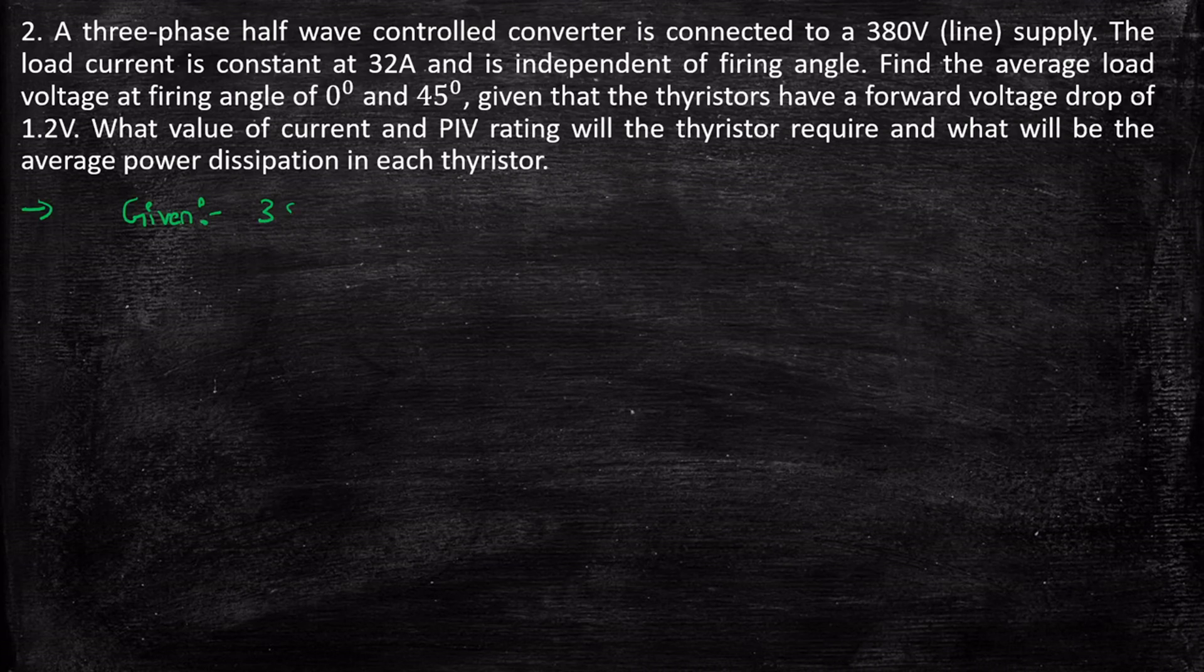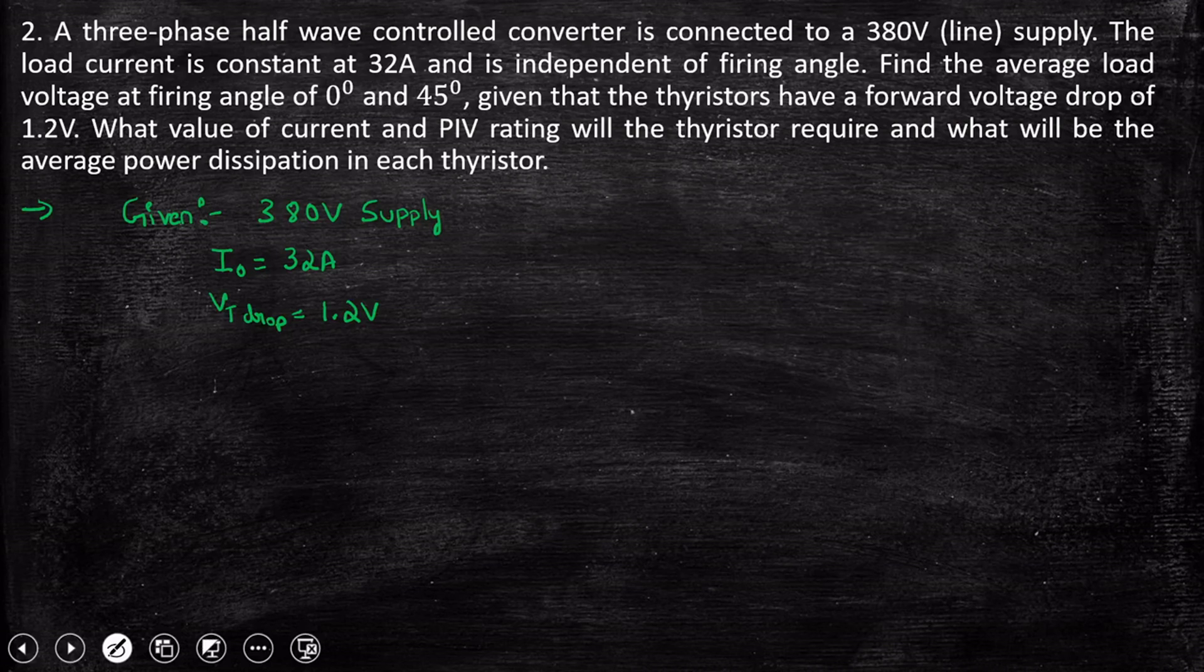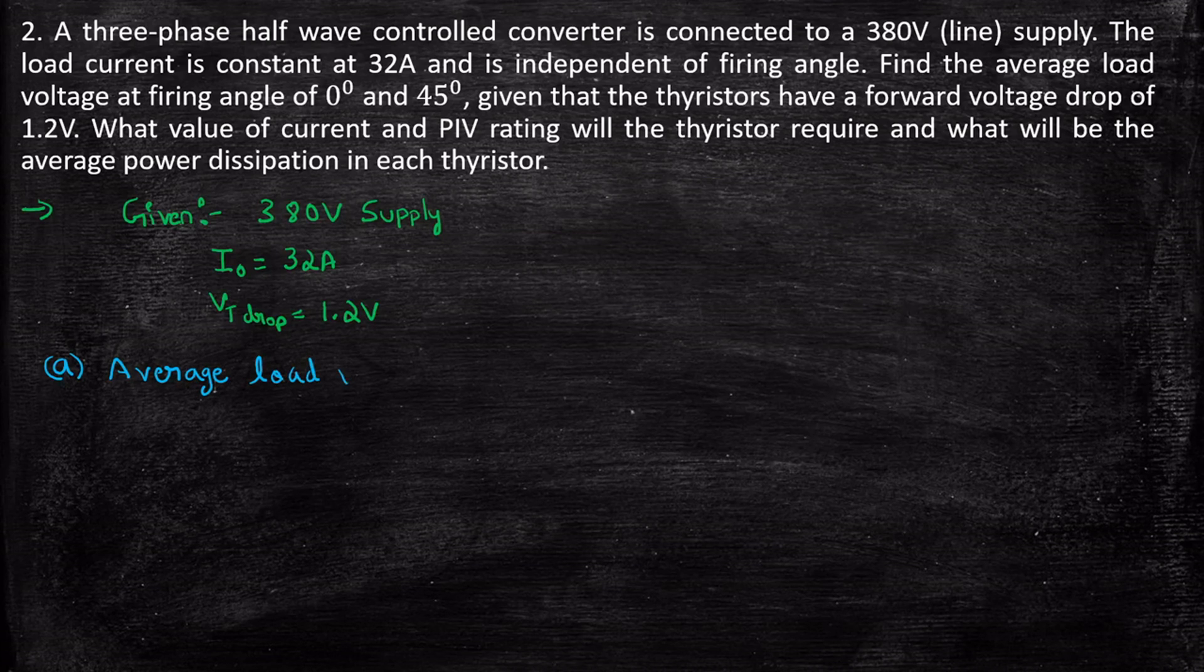They have given it's a 380 volt supply. And they have given I out is found to be continuous with a constant value of 32 amps. And Vt drop is equal to 1.2 volts. Now in order to find the average output voltage, we will again find the first portion of the requirement, that is average load voltage.